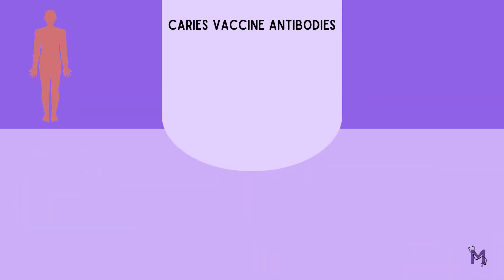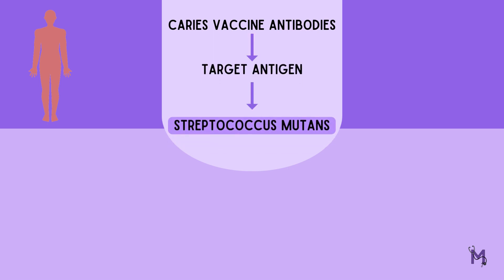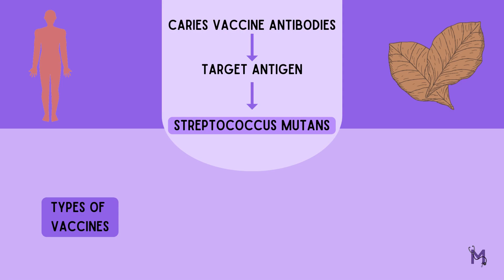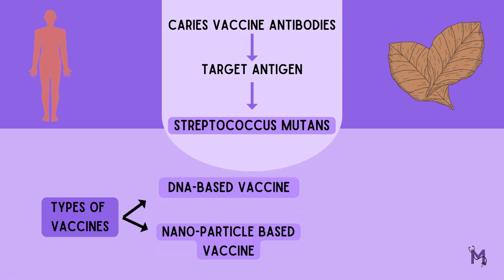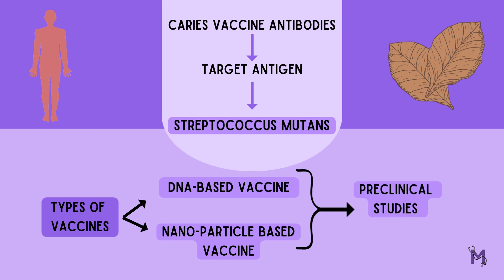For the caries vaccine, monoclonal antibodies specific to the target antigen of Streptococcus mutans have been developed in vivo and in tobacco plants. More recently, researchers have been exploring the use of different types of vaccines, including DNA-based vaccines and nanoparticle-based vaccines, to prevent tooth decay. These approaches have shown promising results in preclinical studies, and there is hope that they could lead to the development of effective caries vaccines in the future.